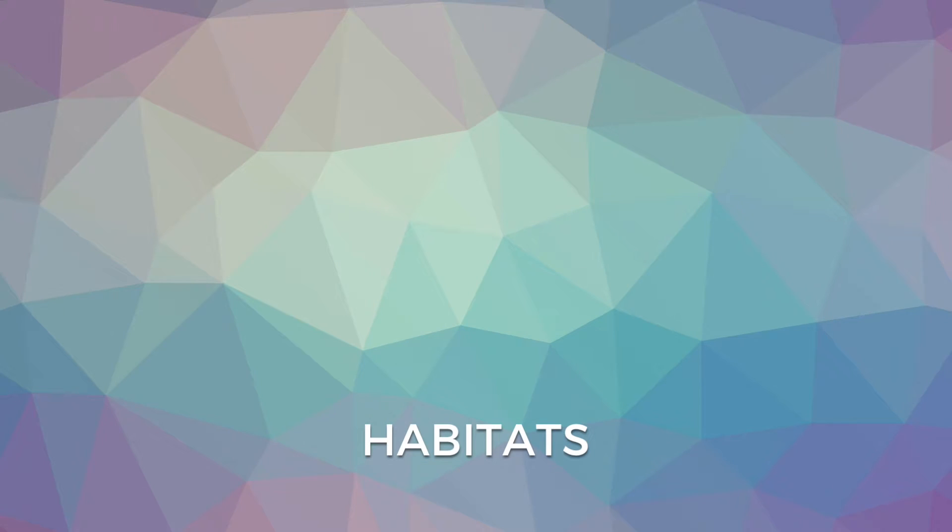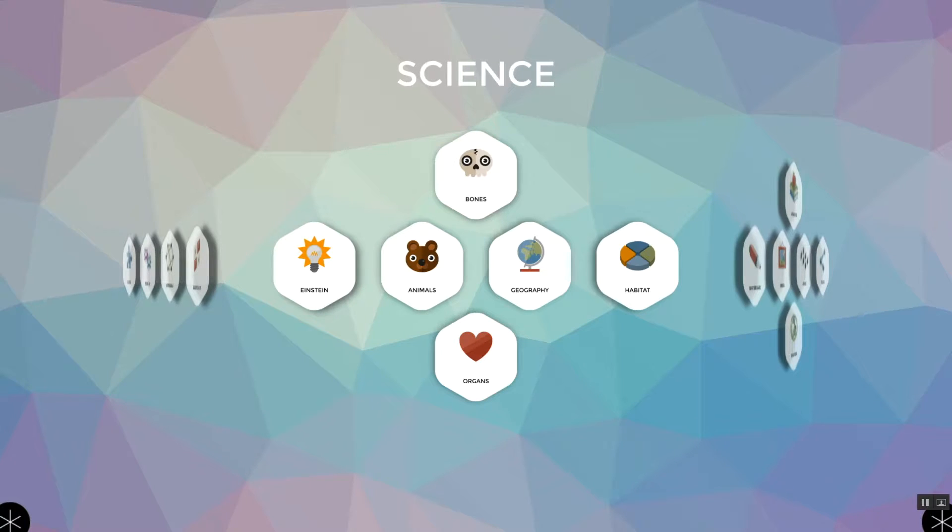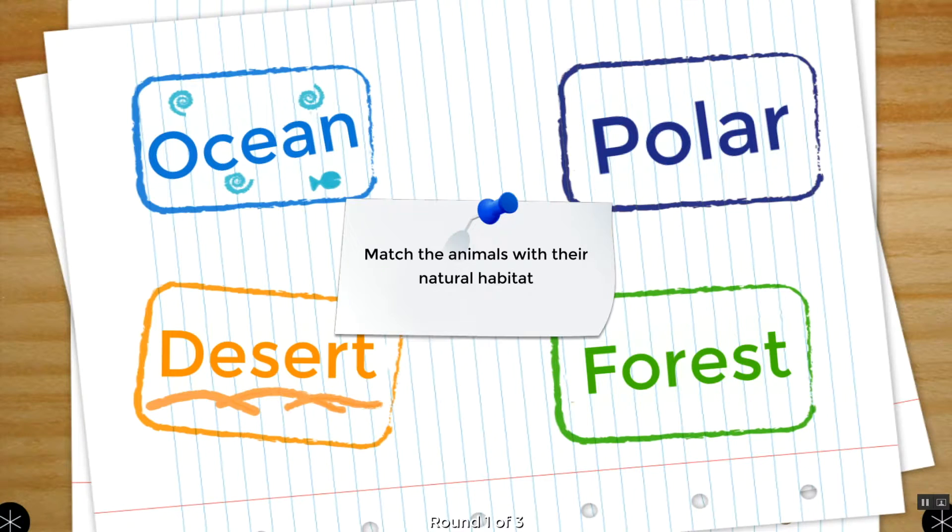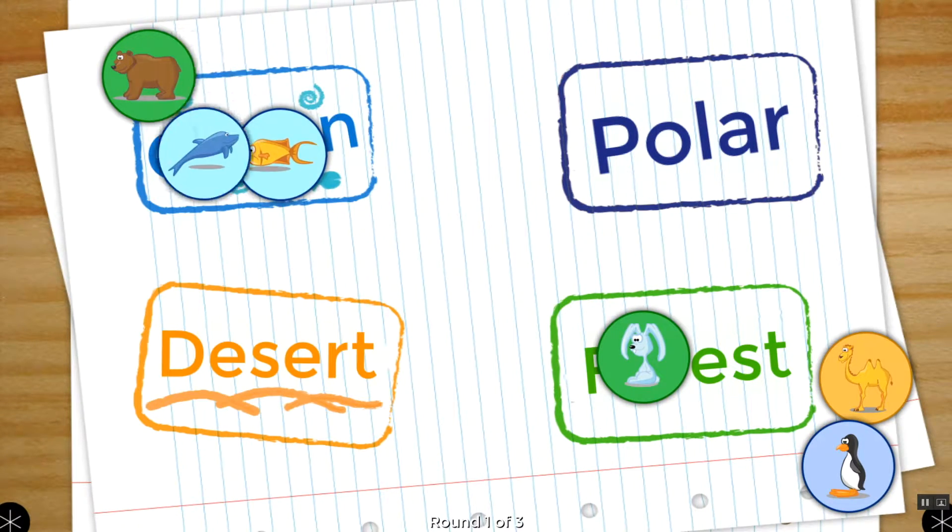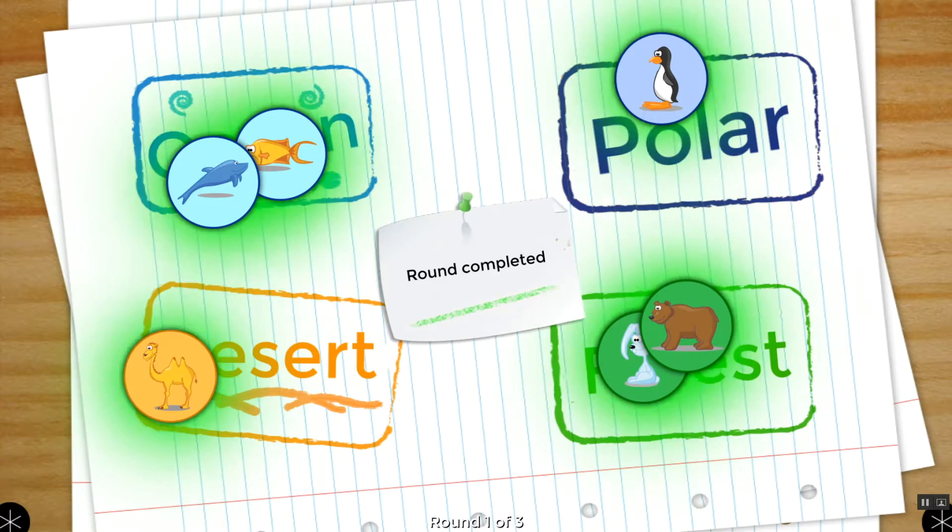The Habitats app is good for use with young children. From the Science menu, select the Habitats icon, which will lead to a screen with four categories of habitats and brief instructions. Picture cards of various animals appear on the screen and students drag them to the correct locations.